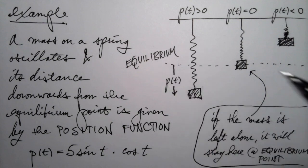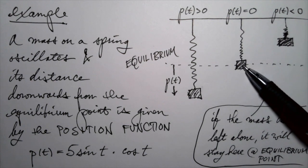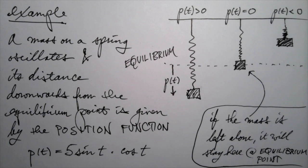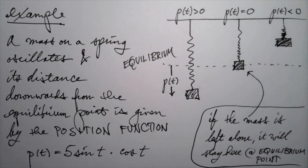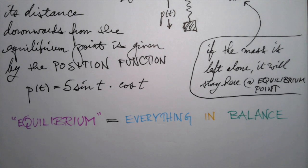What do I mean by equilibrium? Well, if the mass is left alone — if we didn't push it or jostle it, if we didn't force it out of equilibrium — then it would just stay there, hanging at rest. That's what the equilibrium point means: it's the point where the spring wants to be, where it stays at rest. You can think of the word equilibrium as just meaning everything is in balance.